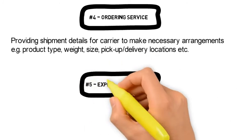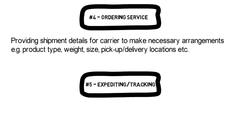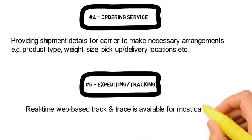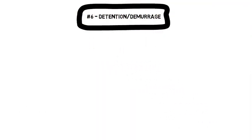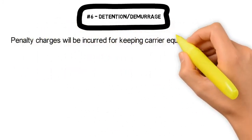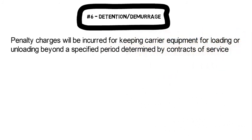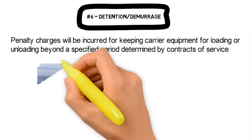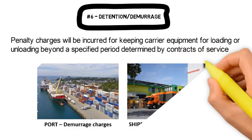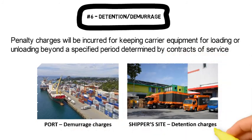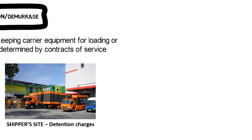Expediting and tracking refers to the shipper either liaising with the carrier or accessing web-based systems to track their shipments. An important aspect of transportation management is controlling costs incurred in detention and demurrage. Since containers are assets belonging to a carrier, there will be penalty charges for keeping them for loading or unloading beyond the specific period determined by the contracts of service. If delayed at the port, the penalty charges are known as demurrage charges; if delayed at the shipper's premises, it is known as detention.